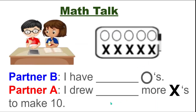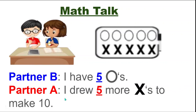I see partner A's drawings on top and partner B's drawings at the bottom. Let's have a map talk about our drawings. Partner B, complete the sentence: I have blank circles. Now partner A, complete the sentence: I drew blank more X's to make 10. Partner B should have said: I have five circles. And partner A should have said: I drew five more X's to make 10.